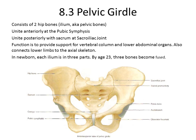Just like the shoulder girdle of the upper body, the pelvic girdle of the lower body consists of two structures: the hip bones. Hip bones are called ilia in the plural and are also known as pelvic bones. The pelvic bones unite anteriorly at a joint called the pubic symphysis, and they unite posteriorly with the sacrum to form the sacroiliac joints. The function of the pelvic girdle is to support the vertebral column and lower abdominal organs, and to connect the lower limbs to the axial skeleton.